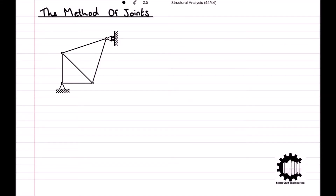For this method we must divide the structure such that we isolate a single node, and in order to obtain a determinate system of equations we must choose a node that has no more than two unknowns, or in other words only two bars. This is because all bars converge to the node so the moment around the point equals zero, leaving only two equilibrium equations. Additionally, the two bars cannot be parallel, as this would leave a single equation with two unknowns.